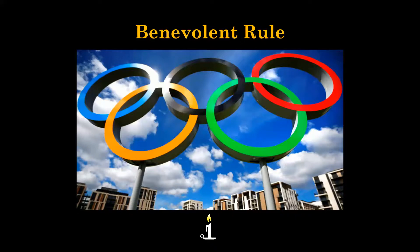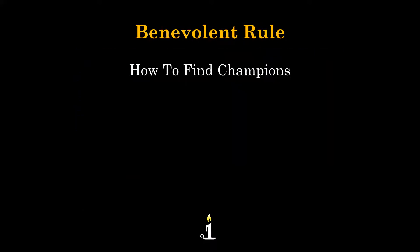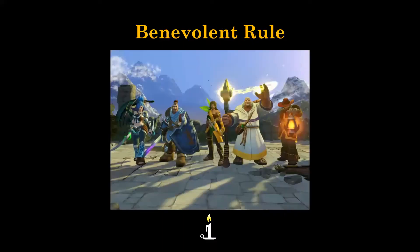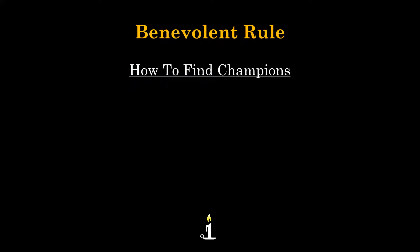One of the things that's so valuable to rulers about the Olympics is that it finds champions. This is absolutely critical for every ruler, because rulers need champions standing by with unique skills and abilities that can accomplish tasks or missions that no one else can. How to find these champions is absolutely critical for a ruler.